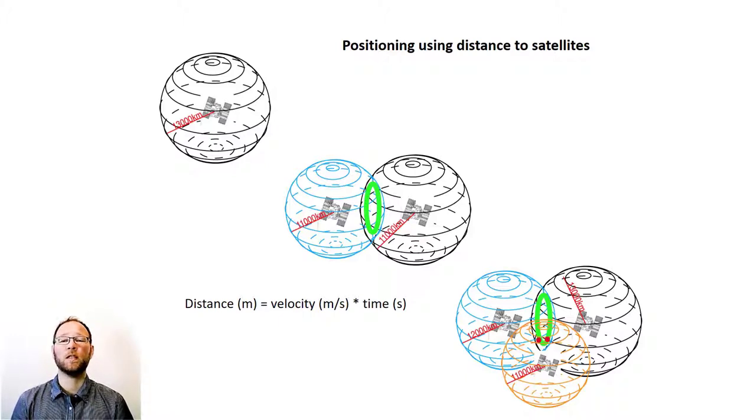In addition, we need the distance to a fourth satellite to correct for that we don't typically have expensive atomic clocks in our instruments.